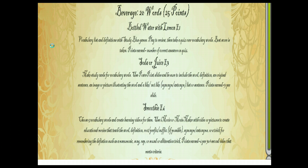The one-point choice is bottled water with lemon — you take the vocabulary list and definitions, learn those definitions, work some flashcards, play some review games, and take a quiz. The three-point option, soda or juice, is where you make study cards using PowerPoint or other software tools, including the word, definition, an original sentence, an image or picture, and synonyms and antonyms — a more intense view of the word. Finally, the smoothie version is worth five points, where you choose words and create learning videos that are even more intense and involve higher-level thinking.